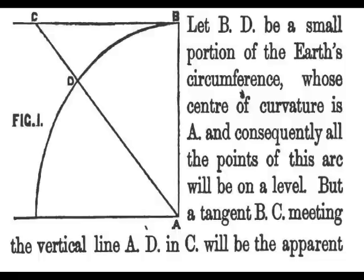A boat with a flag standing three feet above the water was directed to sail from a place called Wellney Bridge to another place called Welch's Dam. These two points are six statute miles apart. The observer, with a good telescope, was seated in the water as a bather, it being the summer season, with the eye not exceeding eight inches above the surface. The flag and the boat down to the water's edge were clearly visible throughout the whole distance.